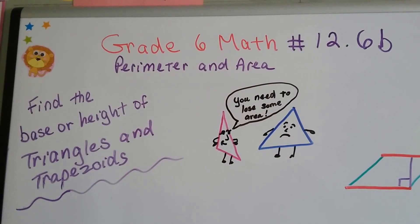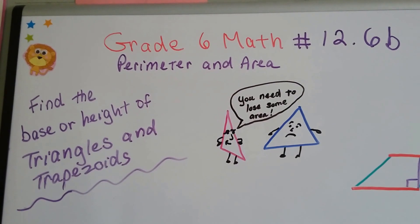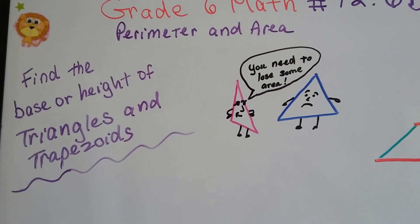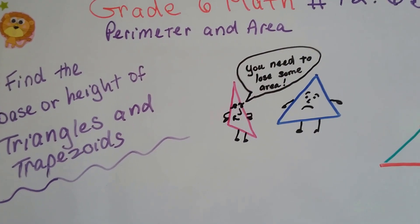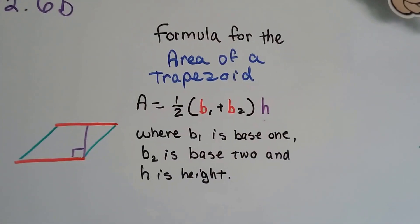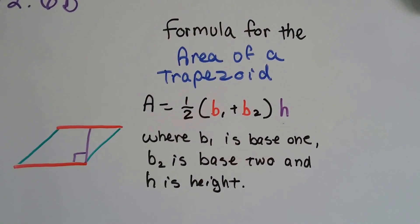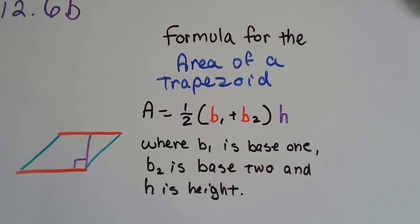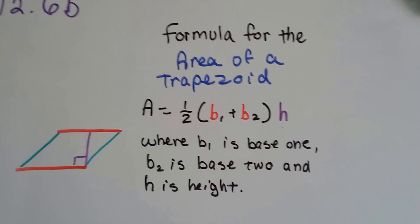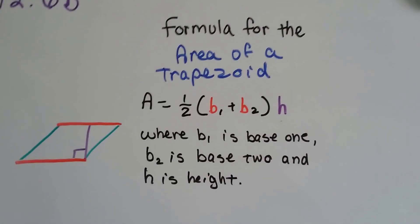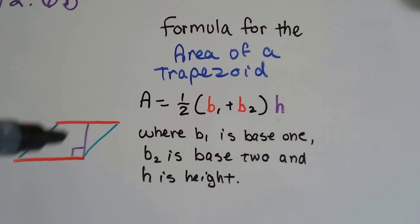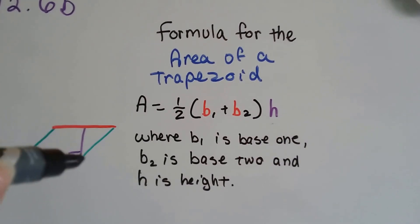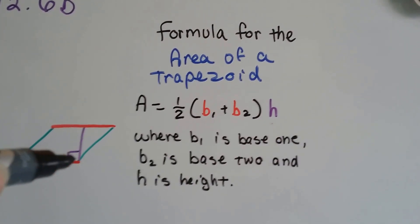Grade 6 math number 12.6b. This is a little extra information from 12.6a. This is going to help you find the base or height of triangles and trapezoids. The formula for the area of a trapezoid is A equals half times base 1 plus base 2 times the height. Base 1 is either the top or the bottom and base 2 is the other side. The height is a perpendicular height and you'll see the 90 degree angle box.